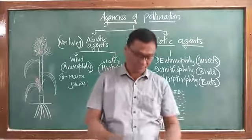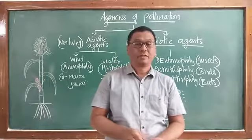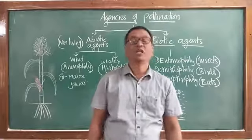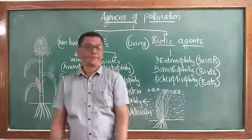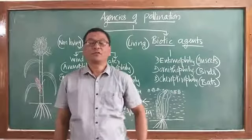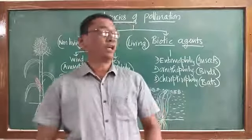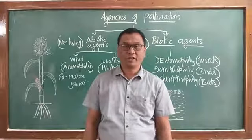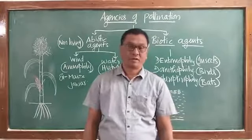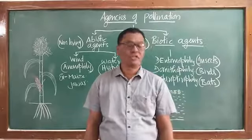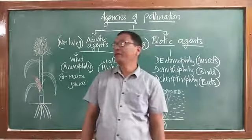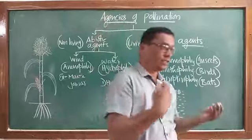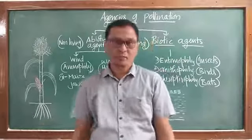Hello everybody. In the last class, we studied pollination and its types. The transfer of pollen grains from the anther to the stigma is of three types: autogamy, geitonogamy, and xenogamy. We also studied how it is classified as self-pollination and cross-pollination.